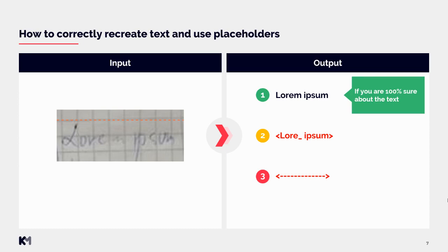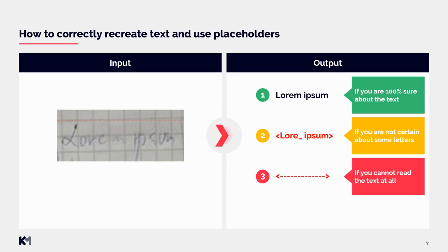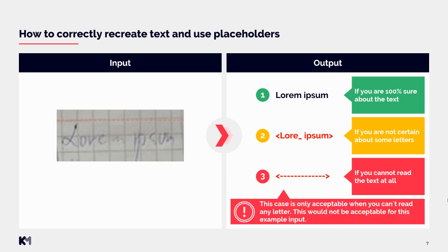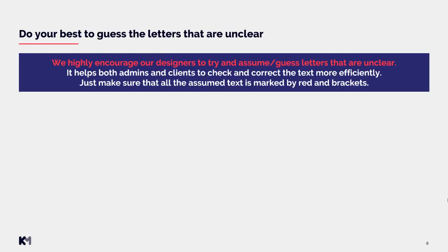In case you are not able to read some letters, use case number two. You have to mark the text you are uncertain about in red color and put it into brackets. If you cannot read some letters at all, use an underscore or dash instead. Case number three is for occasions when you cannot read the text at all — but be aware this is only acceptable when you can't read any letter. We also highly encourage designers to try and assume or guess unclear letters, making sure all assumed text is marked by red color and brackets.